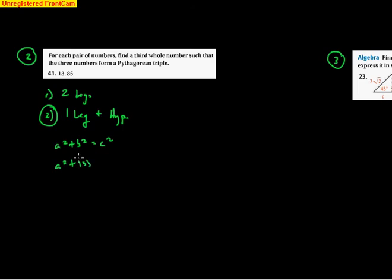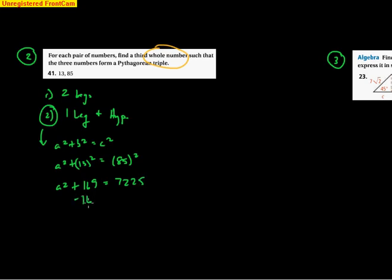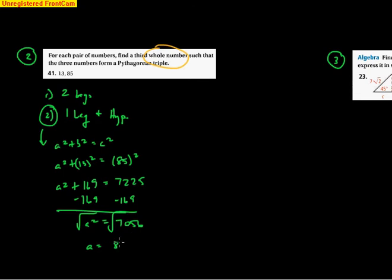So: a² + 13² = 85². That gives a² + 169 = 7225. Subtract 169: a² = 7056. Taking the square root of 7056, I get 84. Since the result is a whole number, the Pythagorean triple is 13, 84, and 85.